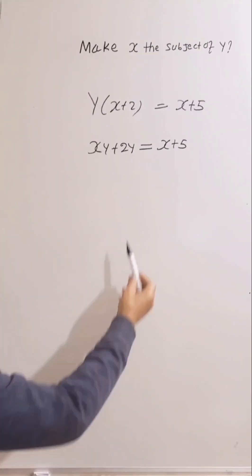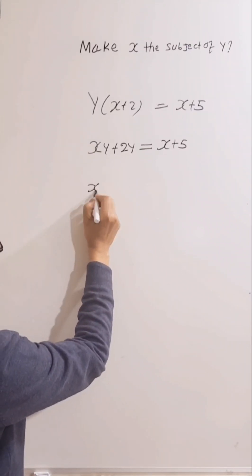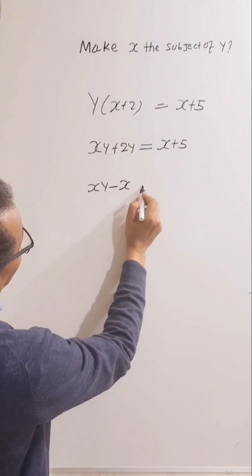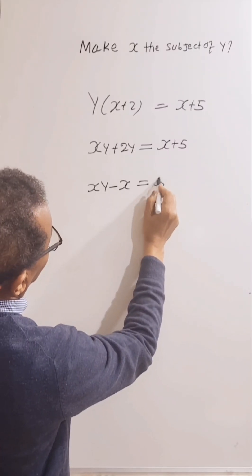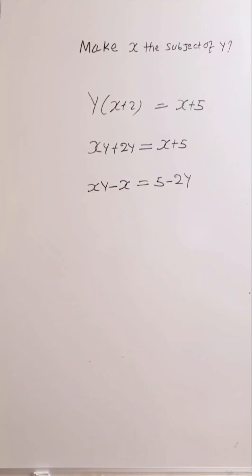So let's bring x this side and 2y the other side. So xy, take away x, equal 5, take away 2y.